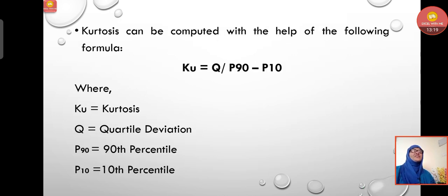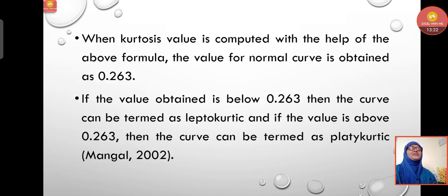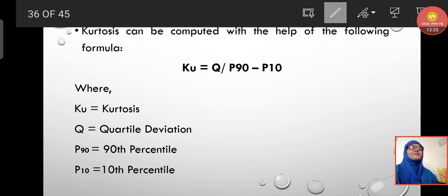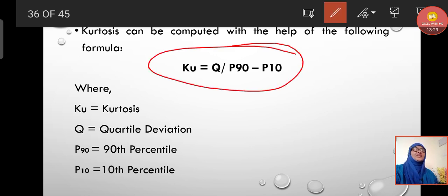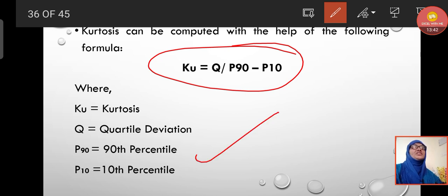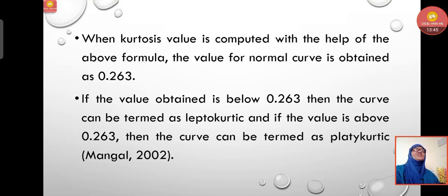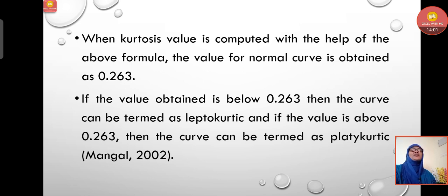Kurtosis can be computed using the formula: Kurtosis = Q / (P90 − P10), where P90 is the 90th percentile and P10 is the 10th percentile. When the kurtosis value is computed with this formula, the value for a normal curve is 0.263. If the value obtained is below 0.263, the curve is termed leptokurtic. If the value is above 0.263, the curve is termed platykurtic.